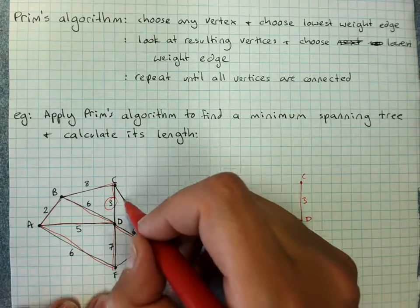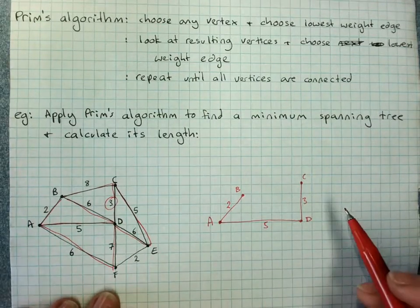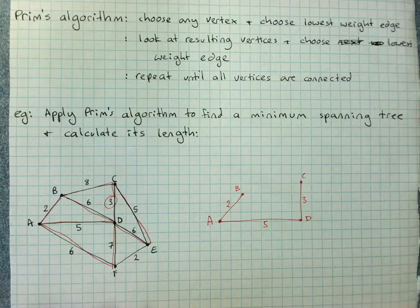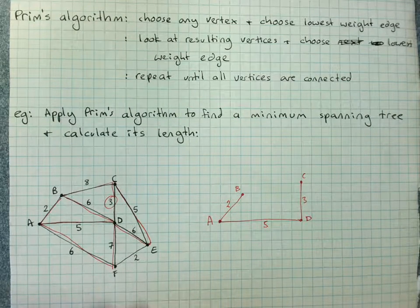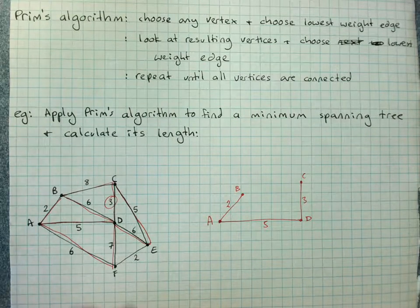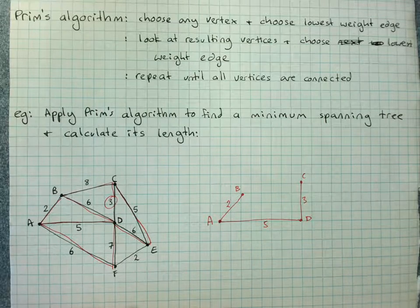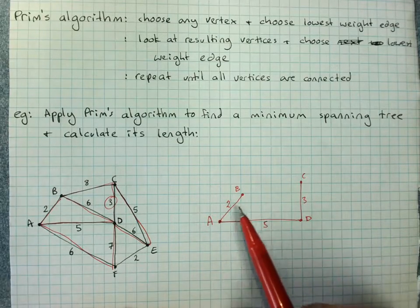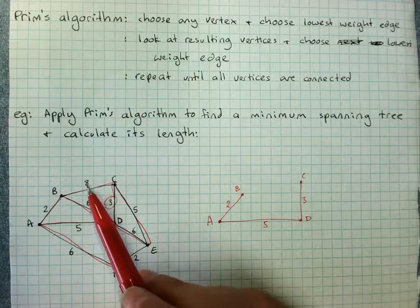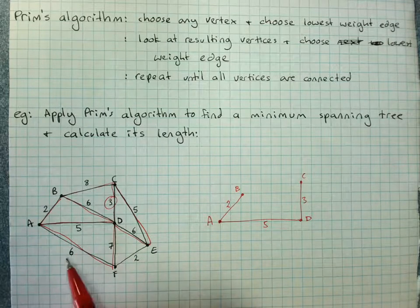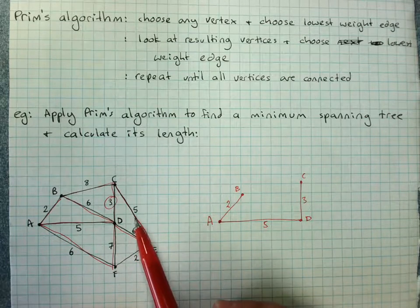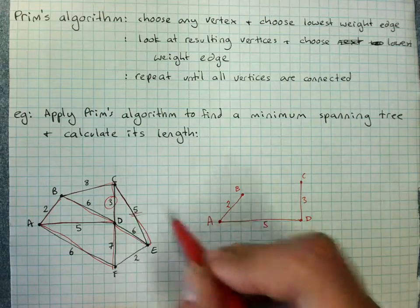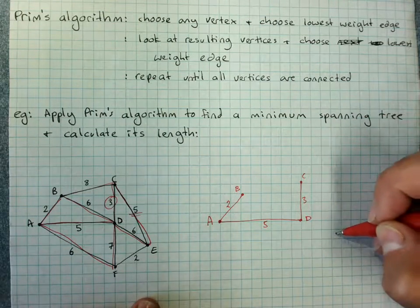Now this edge is involved as well. So you are looking for what the lowest one is now. So we've got 8, 6. We've already got that 5 in. 6, 7, 6, 5. This 5 is now your lowest weighted edge. So that's C down to E.